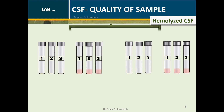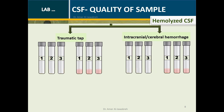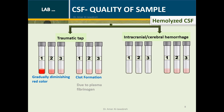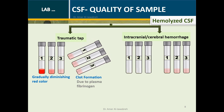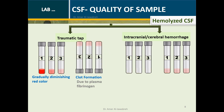Quality of CSF sample — Hemolysis: caused by traumatic tap or hemorrhage. Traumatic tap is viewed as gradually diminishing red color across the three tubes, or clot formation due to plasma fibrinogen. Hemorrhage is viewed as evenly distributed red color across the three tubes, or the absence of clot.